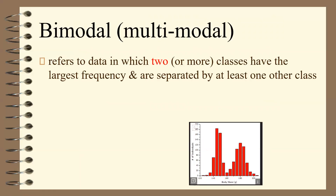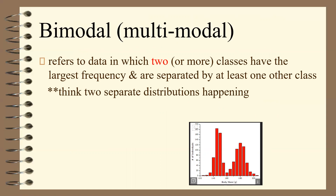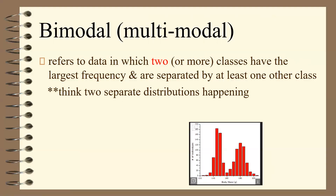Bimodal or multimodal refers to data in which two or more classes have the largest frequency and are separated by at least one other class — suggesting two separate distributions are happening. For example, there might be a high value around 180 and another high value around 145, and the calculated average around 160 wouldn't actually represent where most of the data lies. Bimodal just means two different distributions are occurring. This completes our discussion of types of variables, graphical displays, and shapes of graphs.